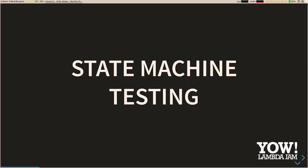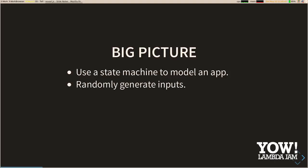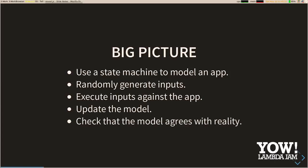That brings us to state machine testing. The big picture is that we have a state machine to model our application and its state. We randomly generate inputs and execute them, as we do with property-based testing. We update our model of the application state locally, and then check that our model agrees with reality — so we make our assertions about the world.